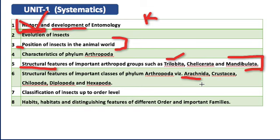For Crustacea — five to six characteristics are very important and frequently asked in objective, subjective, and fill-in-the-blank questions. The body is covered with a hard carapace; appendages are biramous (divided into two branches); they have claws and two pairs of antennae; they have stalked eyes; and they are both terrestrial and aquatic. Examples include crab and lobster.